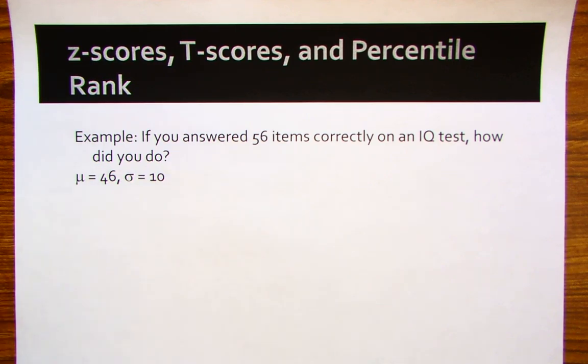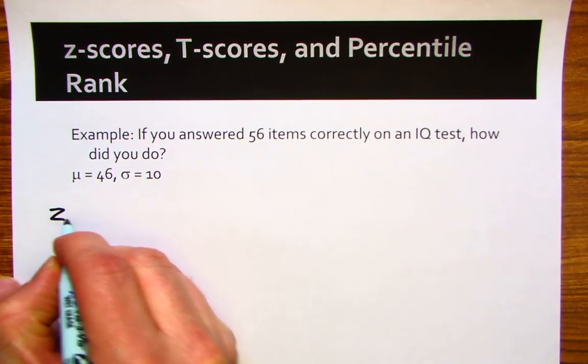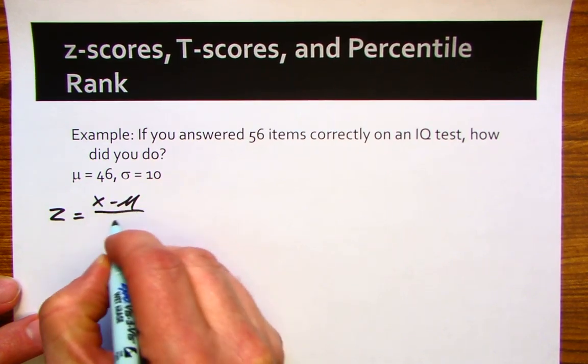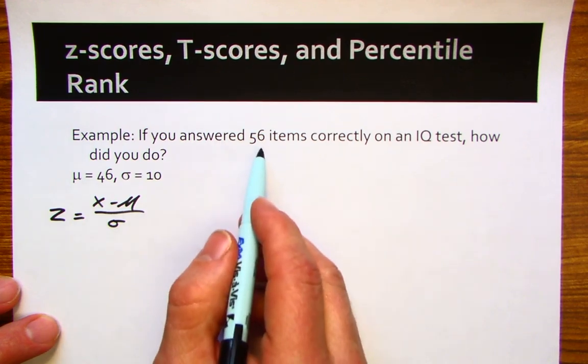We could first figure out the z-score for how you did on this IQ test. The formula for the z-score is x minus μ divided by standard deviation. X is your score.